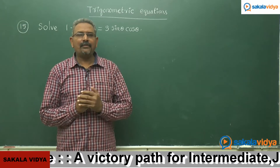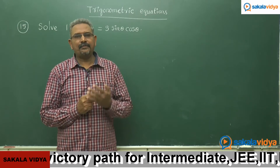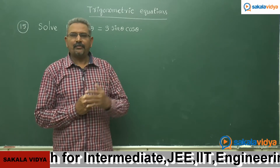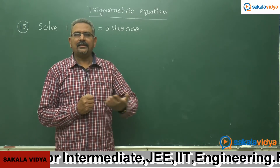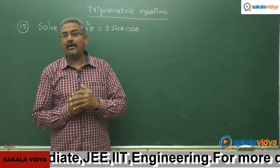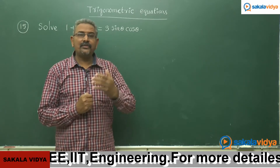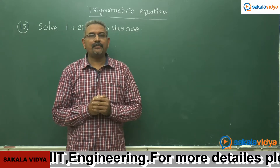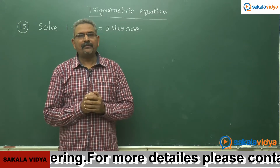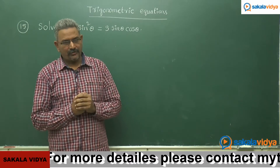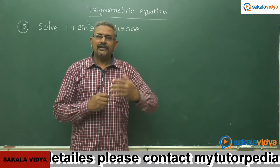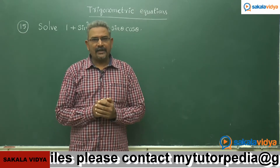Since it is in the form of A cos square theta plus B sin square theta equals to something C sin theta cos theta, whenever the question is in this form, it is better to divide both sides by cos square theta, where cos theta does not equal to 0. Then this can be put in terms of tan square theta.